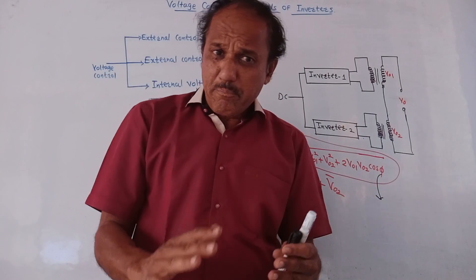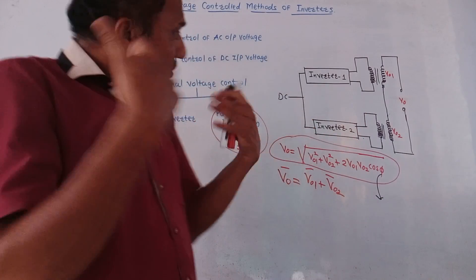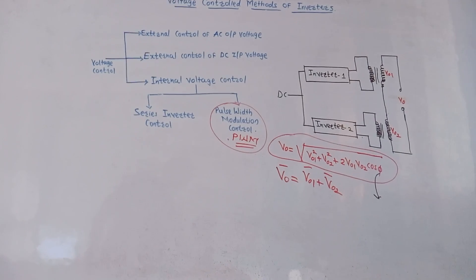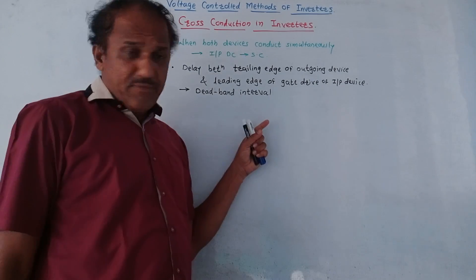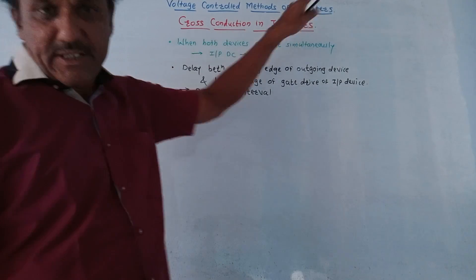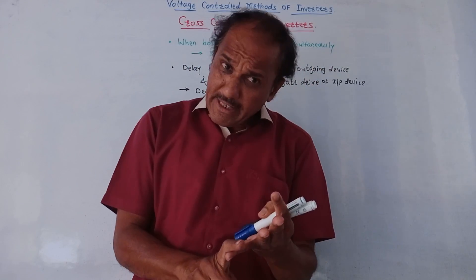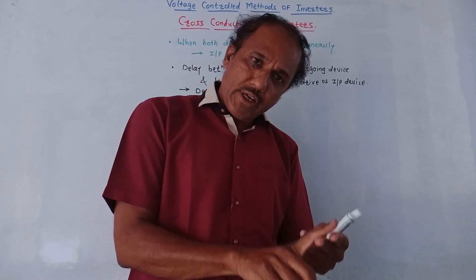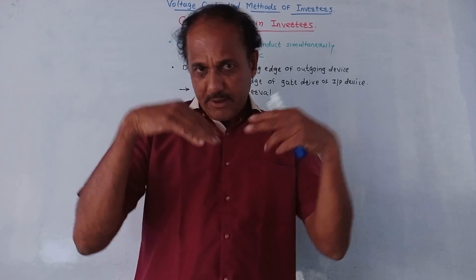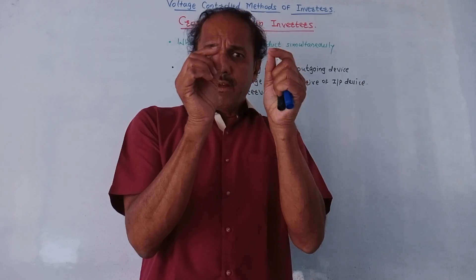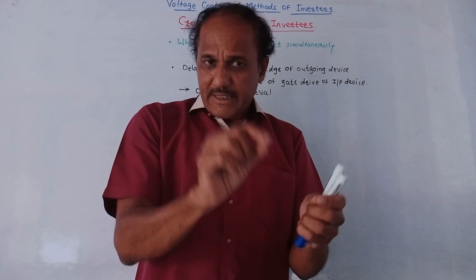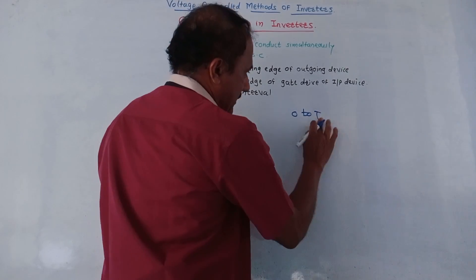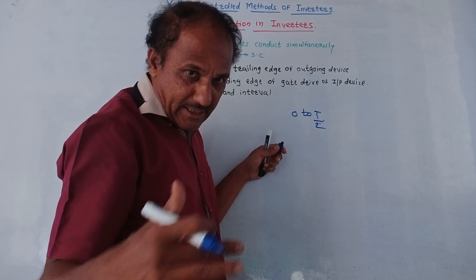We will also cover the remaining part in this video — that is, cross conduction. Cross conduction means that simultaneously some devices are conducting. For example, in half-controlled inverters, during the first half time interval from 0 to T/2, one MOSFET or one IGBT is conducting. So from 0 to T/2 we switch on MOSFET M1, and from T/2 to T we switch on MOSFET M2.